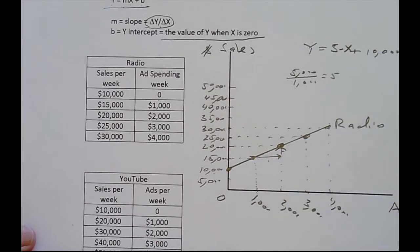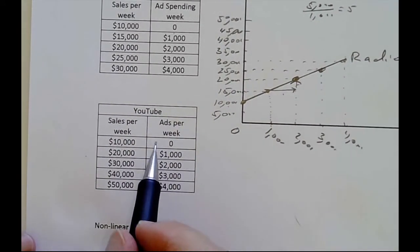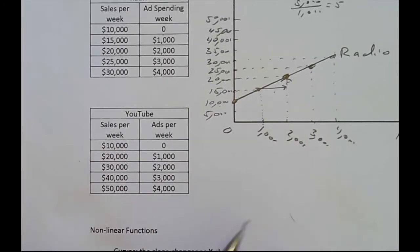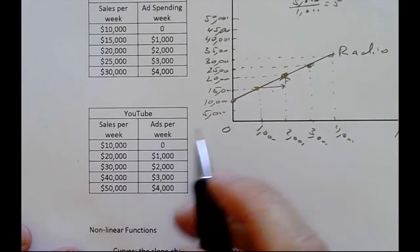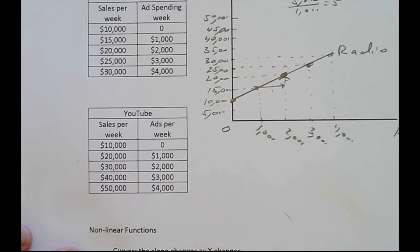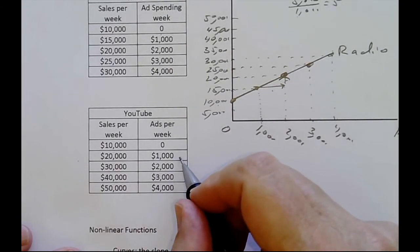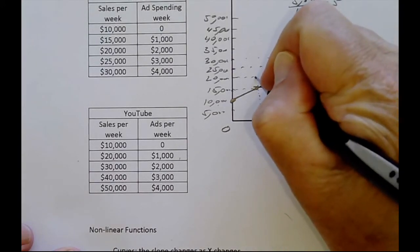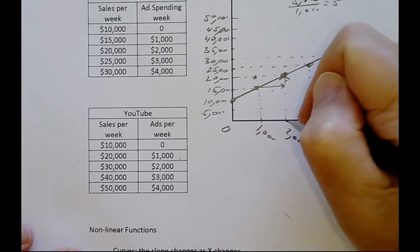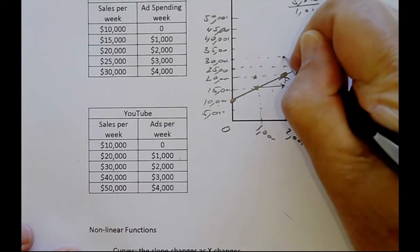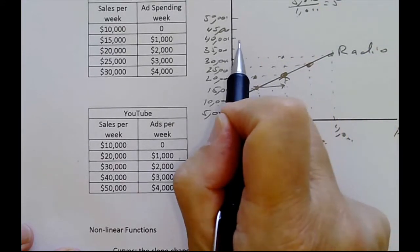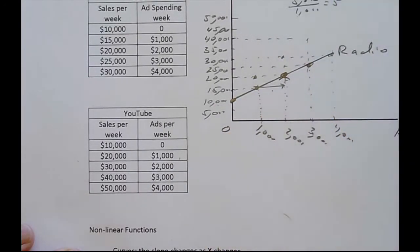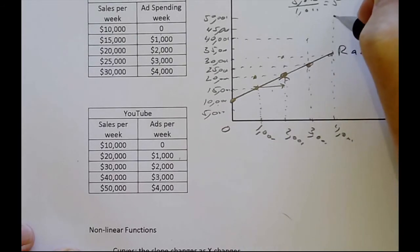Another type of advertising could be on YouTube. If I put this data up here, we have $10,000 again if we have no ads. If we have one ad a week for $1,000 on YouTube, we get $20,000 in sales. Then two ads gives us $30,000 in sales. Three ads give us $40,000. And four ads give us $50,000 in sales. So this line is going to be steeper.